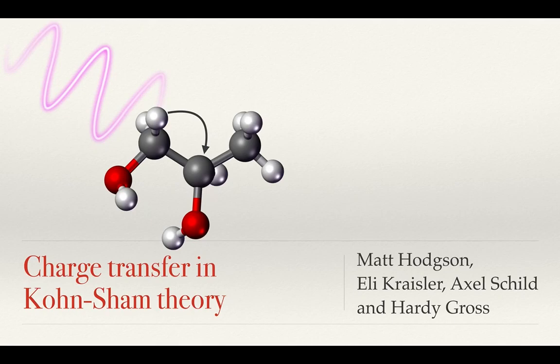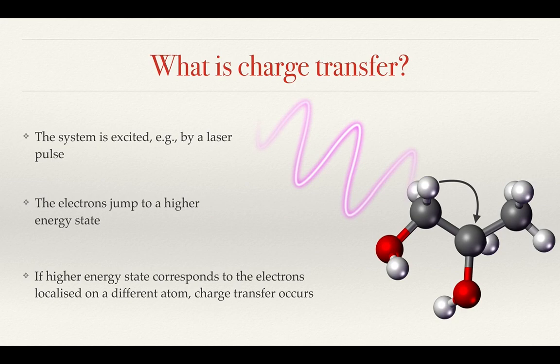In this video, I discuss the modelling of charge transfer in Kohn-Sham theory. When a system of electrons is excited, electrons jump from usually the ground state to an excited state. This excitation can cause the transfer of charge from one part of the system, the donor, to another part of the system, the acceptor.